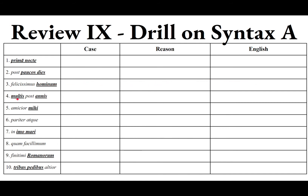Number four: multis post annis. We know post takes the accusative, as in number two. But post, when working with an ablative, means 'afterwards' or 'later.' So multis annis is ablative — and even though annus is a time word, this is not ablative of time; it is ablative of degree of difference. Post means 'later,' and multis annis means 'by many years.' In English we say: many years later.